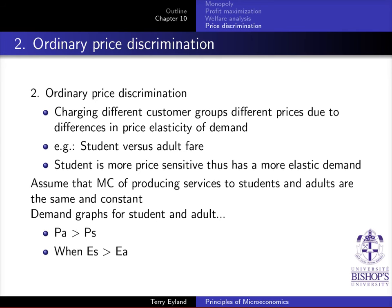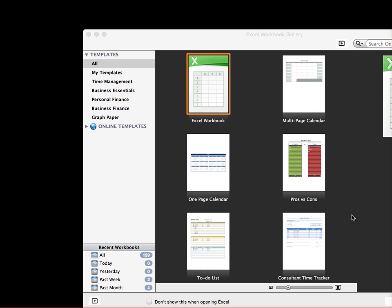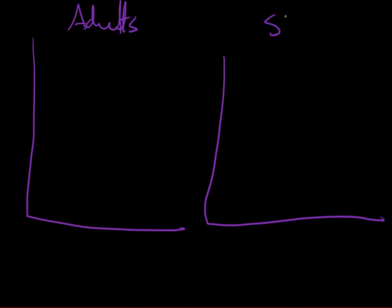Ordinary price discrimination, on the other hand, is very common. It's charging different customer groups different prices based on their elasticity of demand. So if we were to look at going to the movie theater, we have adults - young professionals, people that have a job, no longer in school, earning a certain amount of money - and we have students. We look at both of these groups and try to see what their demand curves would look like if we aggregate all adults and all students together.